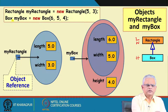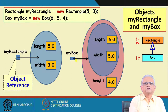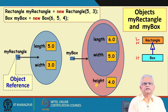When we instantiate the box with the new keyword, we get the object reference my box, which points to the box object. The box object internally has the inherited attributes length and width set to 6 and 5, and the new attribute height defined with a value set to 4.